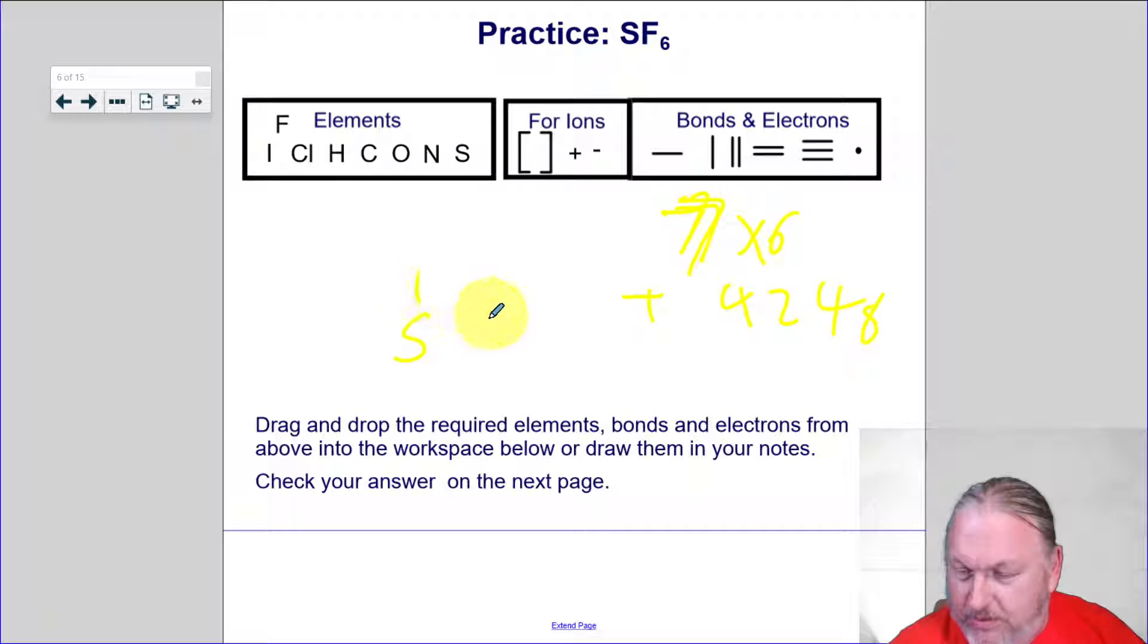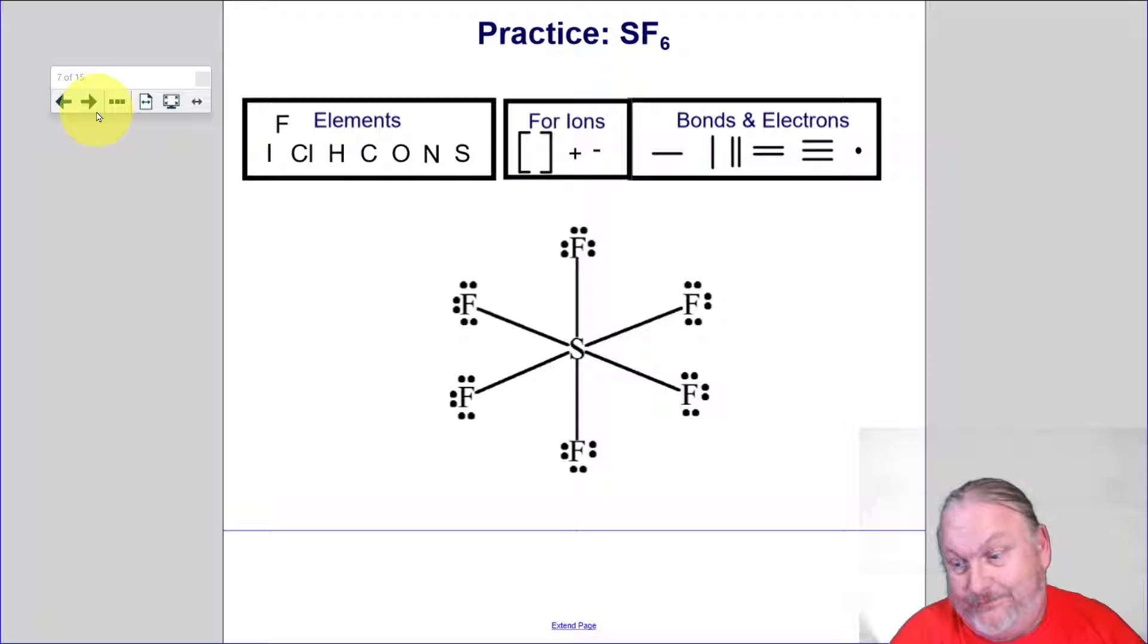Plus six is 48 electrons. How do we draw that? Sulfur is going to be in the middle. Then we're going to draw one, two, three, four, five, six fluorides around there. Then we just start adding electrons. And I think you can see that we're going to have a bunch of electrons. And the fluorides each have eight. So that's going to be eight times six is 48. That's the way that one is. Weird.